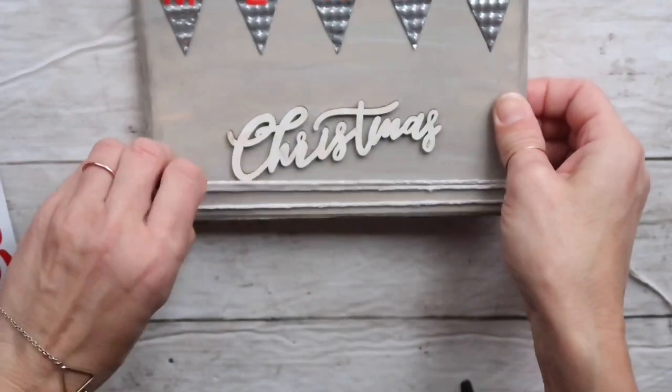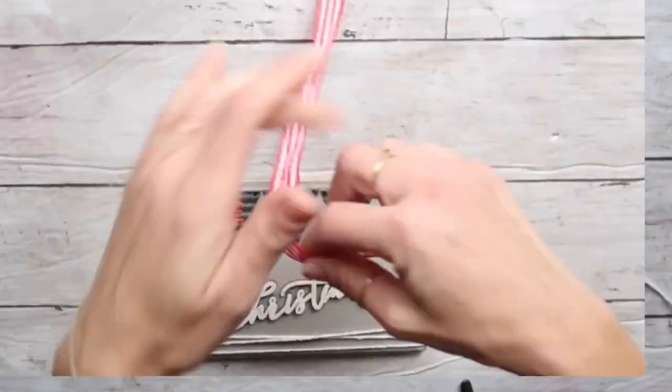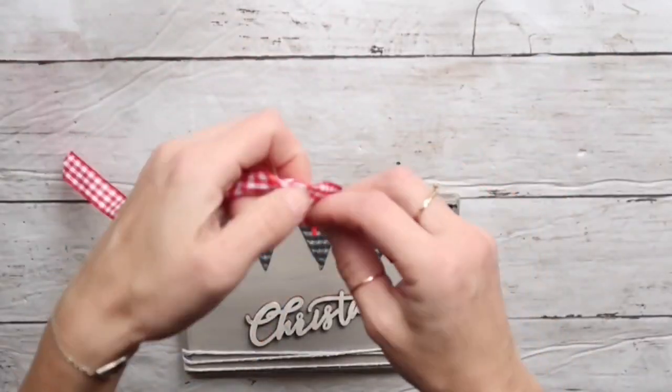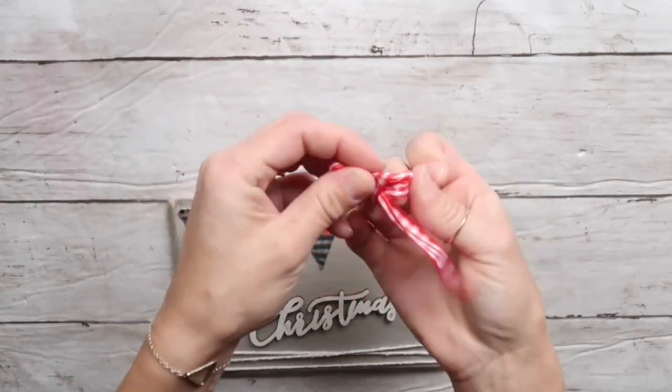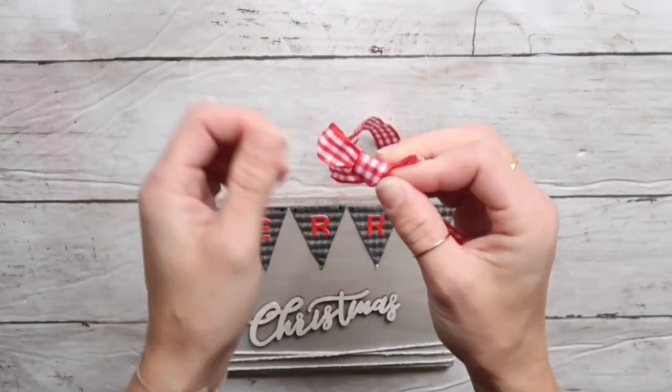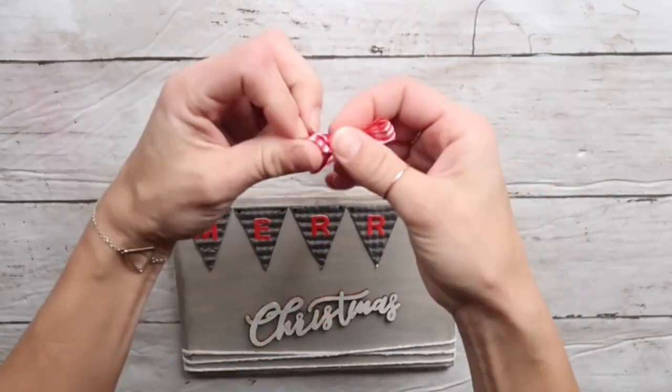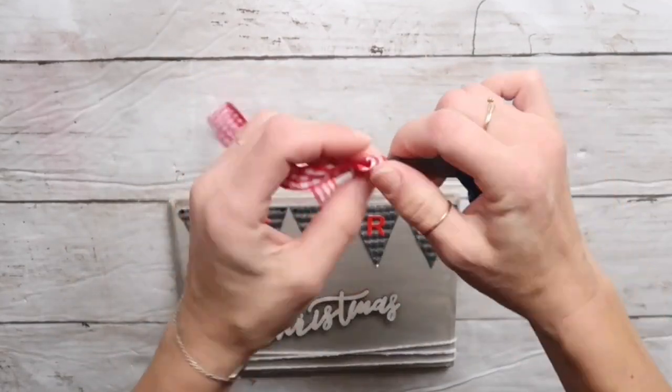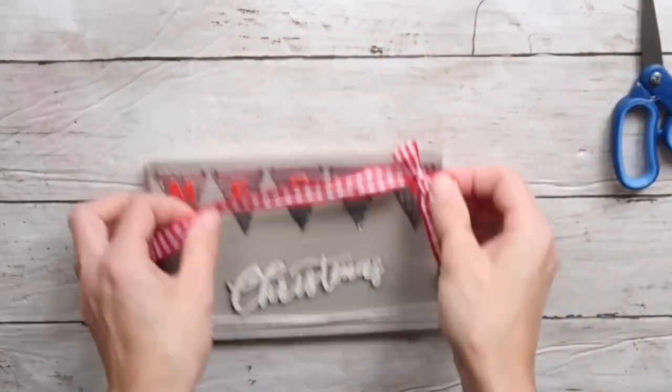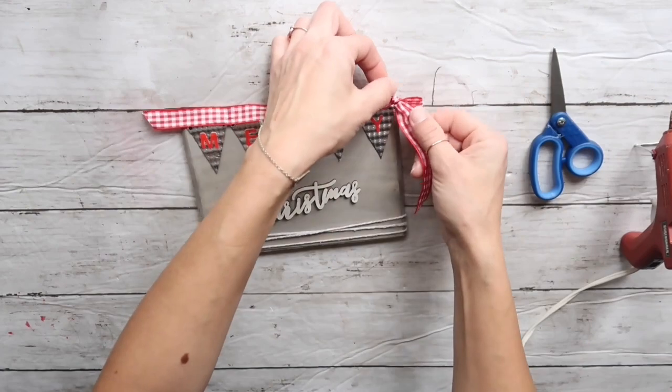I thought this looked a little bit plain so I decided to add a bow. I had this red checkered ribbon and made a very simple bow - just the one that you make when you tie your shoes. After I was happy with the size and the way my bow looked, I positioned it on the top right corner, cut off the tails, and used hot glue to attach it.